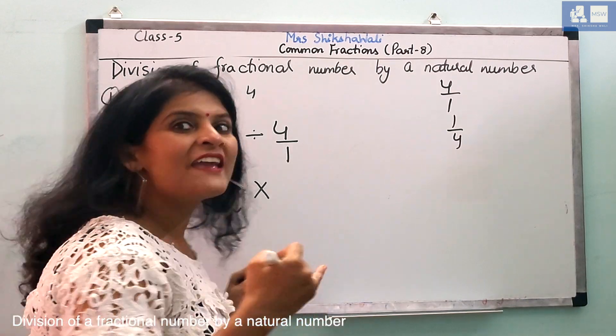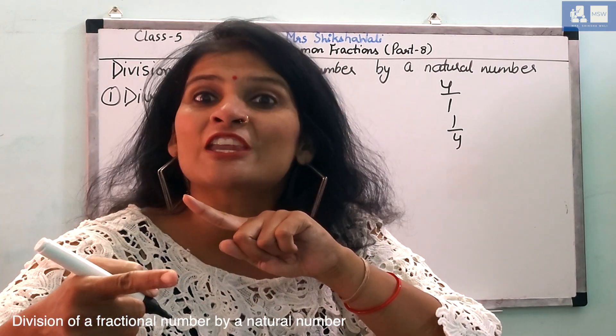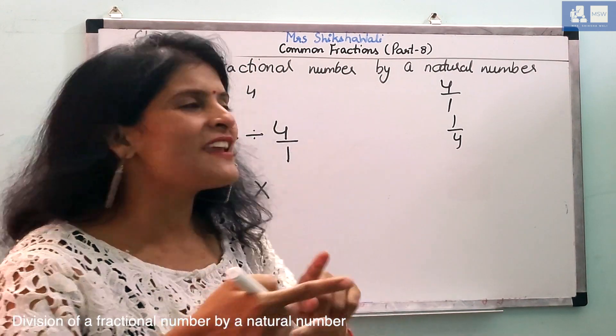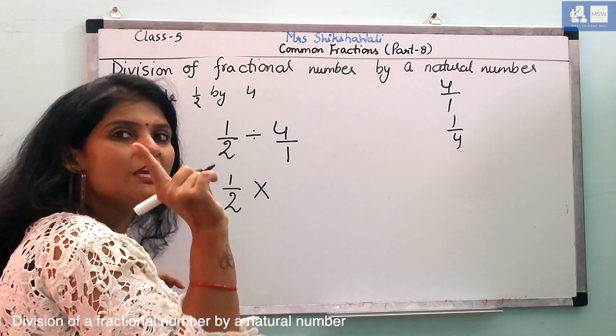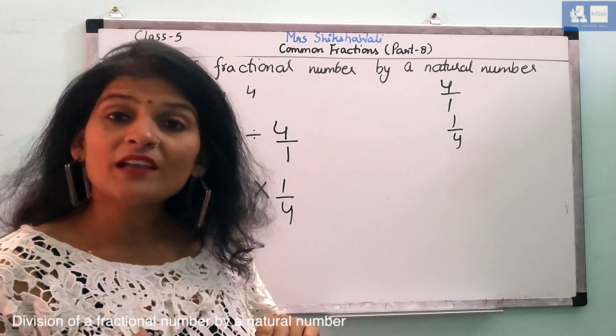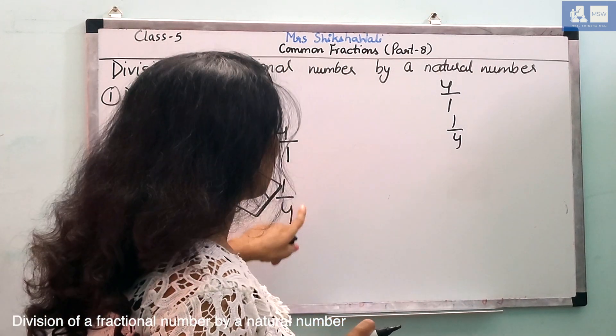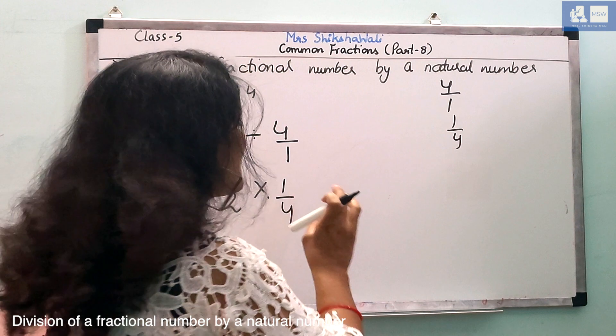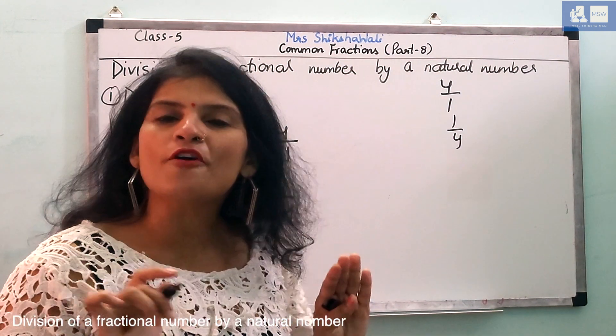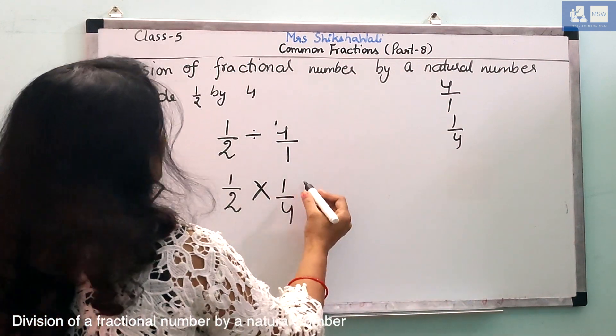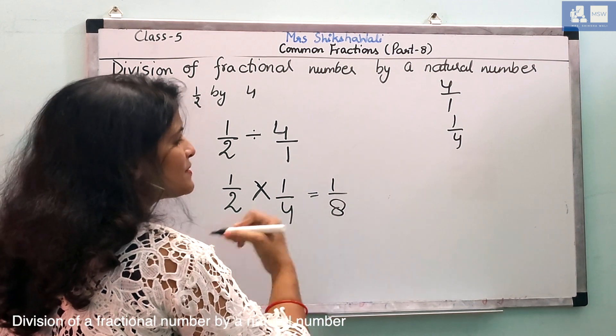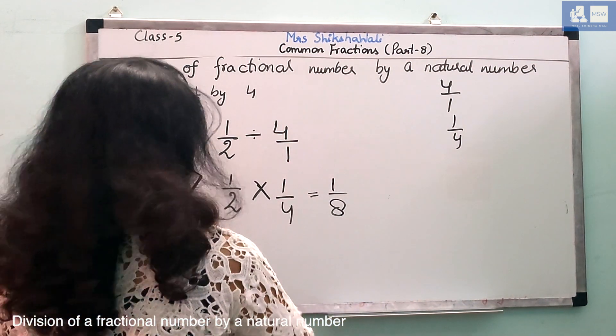So, this is our fraction. This will also be multiplicative inverse. When you have a division sign, the sign of a fraction will be multiplicative inverse. It will give you a fraction. 1 by 8 is your answer.